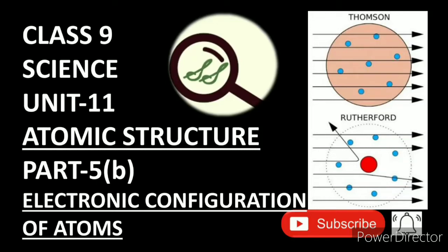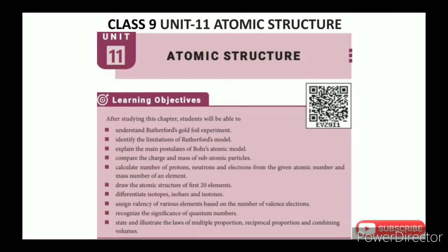Greetings from SS Class 9 Science Unit 11 Atomic Structure Part 5B: Electronic Configuration of Atoms. The learning objectives are: understand Rutherford's Gold Foil Experiment, identify the limitations of Rutherford's model, and explain the main postulates of Bohr's atomic model.